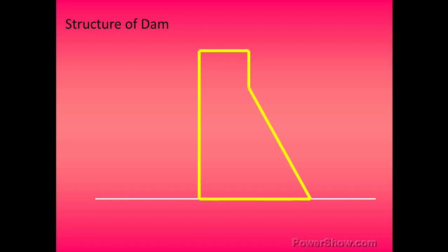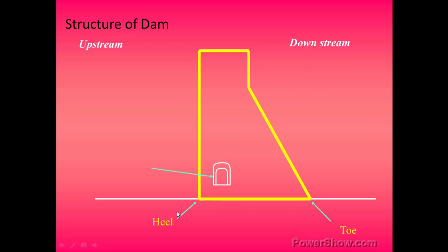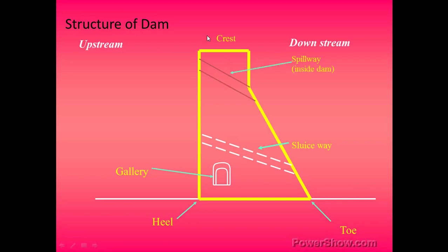Next is the structure of dams. The structure of a dam consists of a barrier. This is the upstream side from which the water will flow and this is the downstream side. This is called the heel, while this is called the toe and this is called the gallery. This is the sluiceway while this is the spillway. This is the crest level of the dam. These are the normal water level and this is the maximum water level.